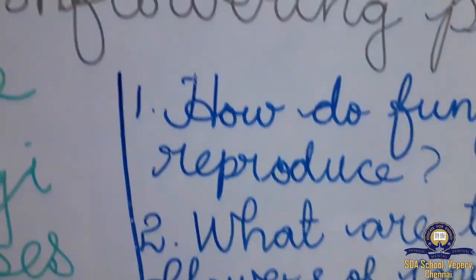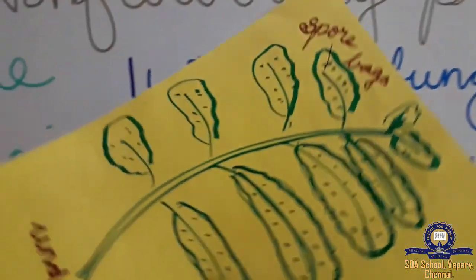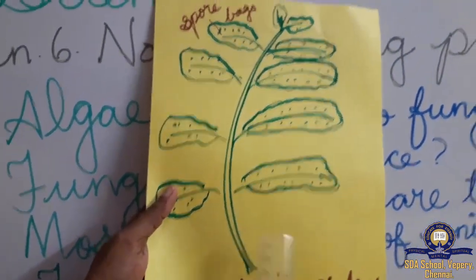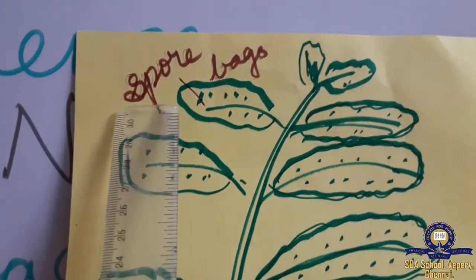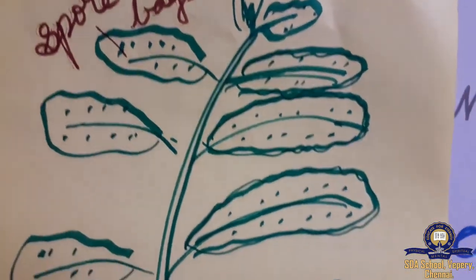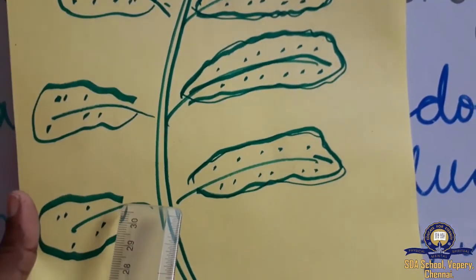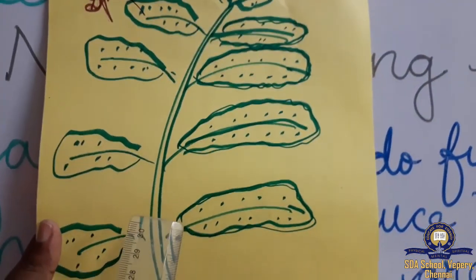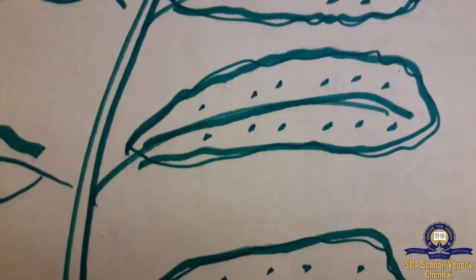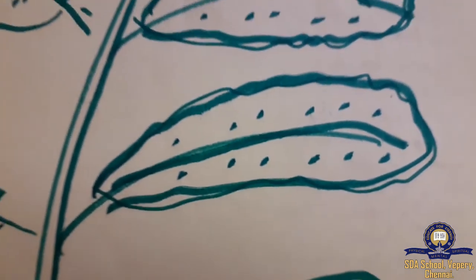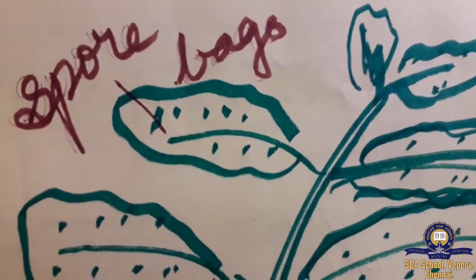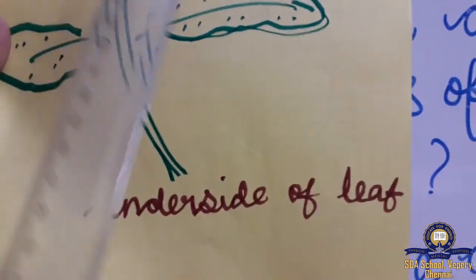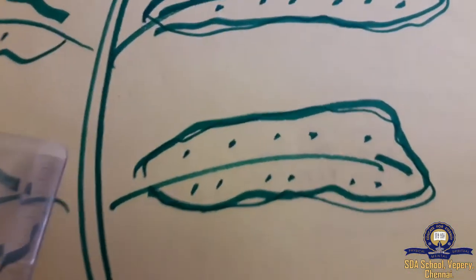Next, you can see under the leaves — the underside of a leaf — small brown or green color spore bags. From these spores, the plants reproduce. Usually, flowering plants reproduce through flowers; the flower becomes a fruit and the fruit gives us seeds. But in non-flowering plants, you can see spores on the underside of a leaf. With the spores, the plant reproduces.